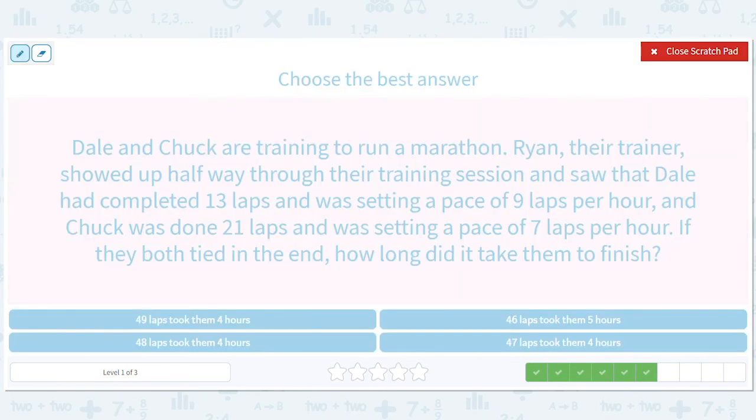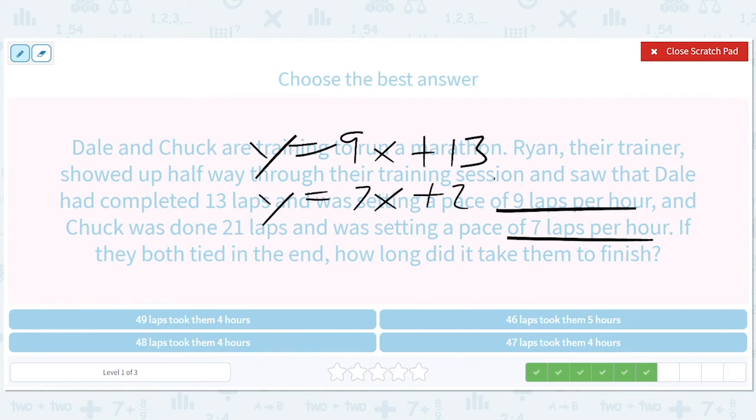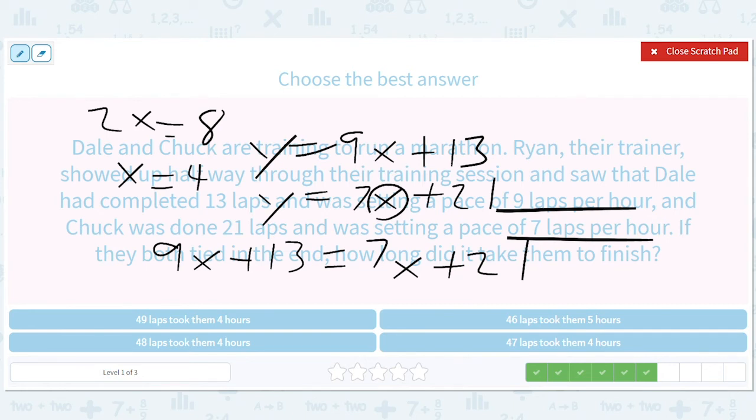All right. 13 laps per hour. Y equals 9X plus 13. 7 laps per hour. Y equals 7X plus 21. 9X plus 13 equals 7X plus 21. This will give us 2X equals 8. X equals 4. Plug that into either. I'll put it in here. That'll give me 28 plus 21 is 49. So 4 and 49.